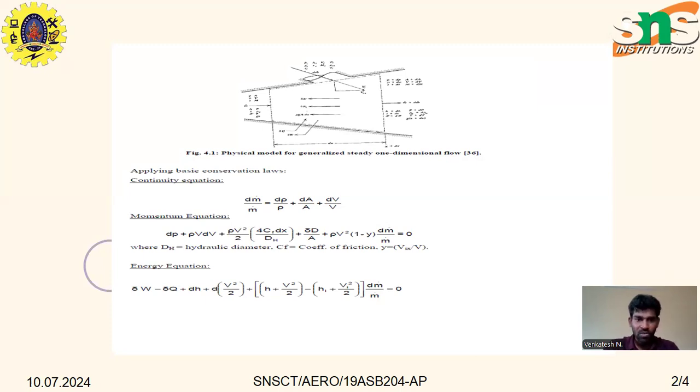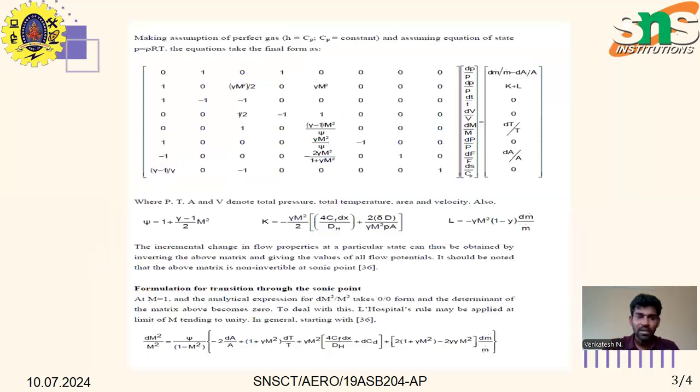Momentum equations with respect to the prime condition and energy equations are also located here. The numerical method simultaneously solves for thrust and pressure coefficient. Engine calculation assumes perfect gas with h = cp constant, and equation of state p = ρRT. Here pt and Tt denote total pressure and total temperature, along with area and velocity.